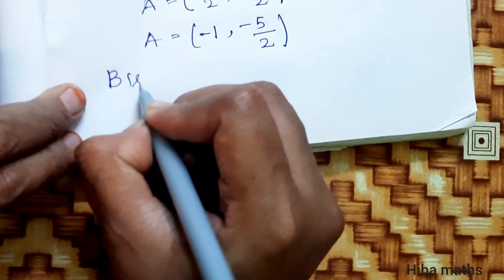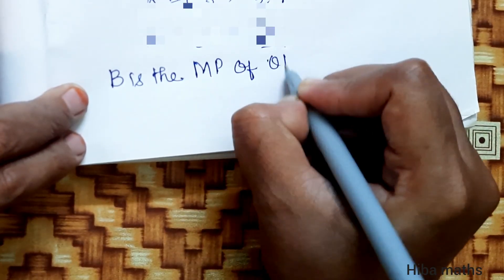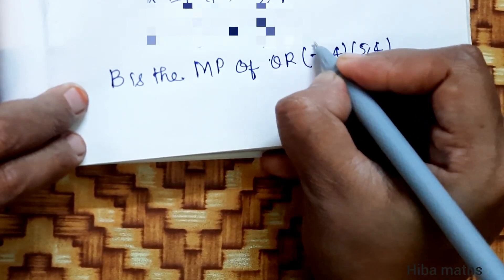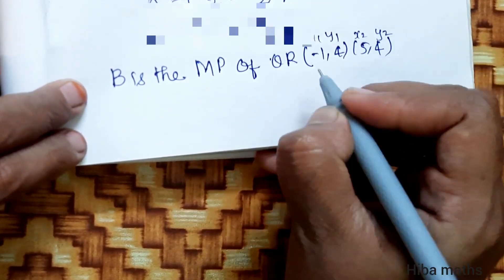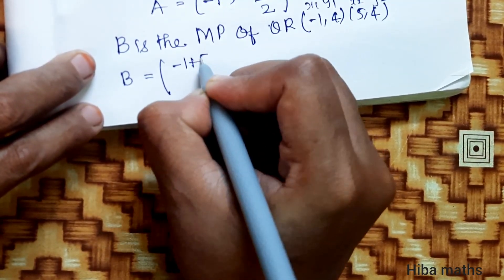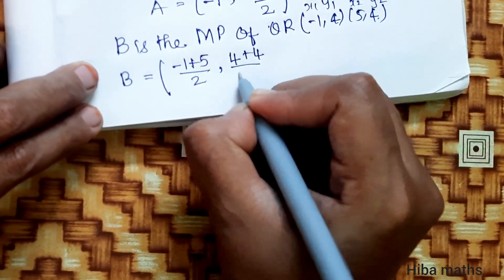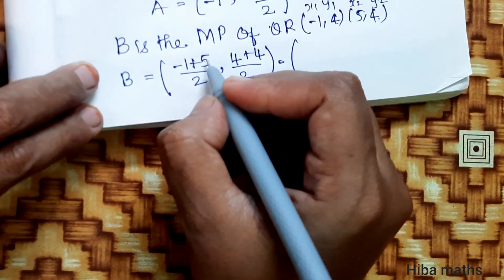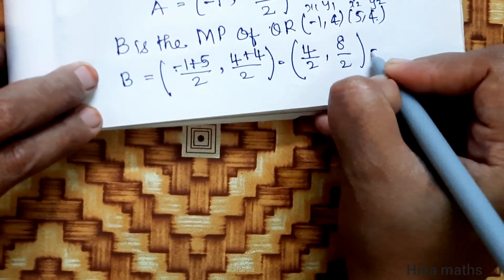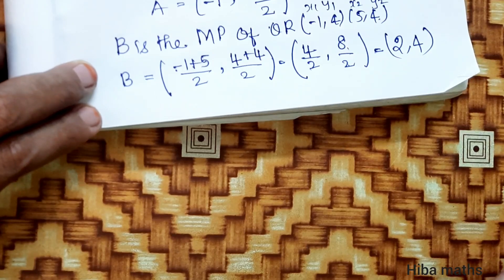B is the midpoint of QR. Q is (-1, 4) and R is (5, 4). B = (-1 + 5)/2, (4 + 4)/2 = 4/2, 8/2 = 2, 4. So B = (2, 4).